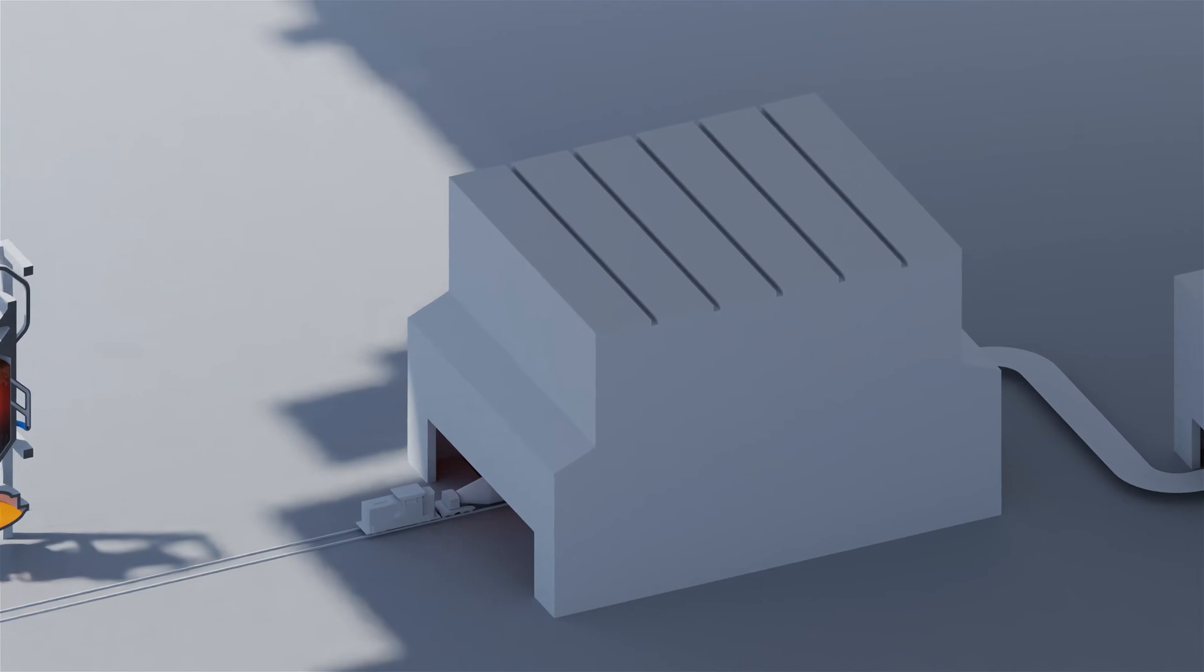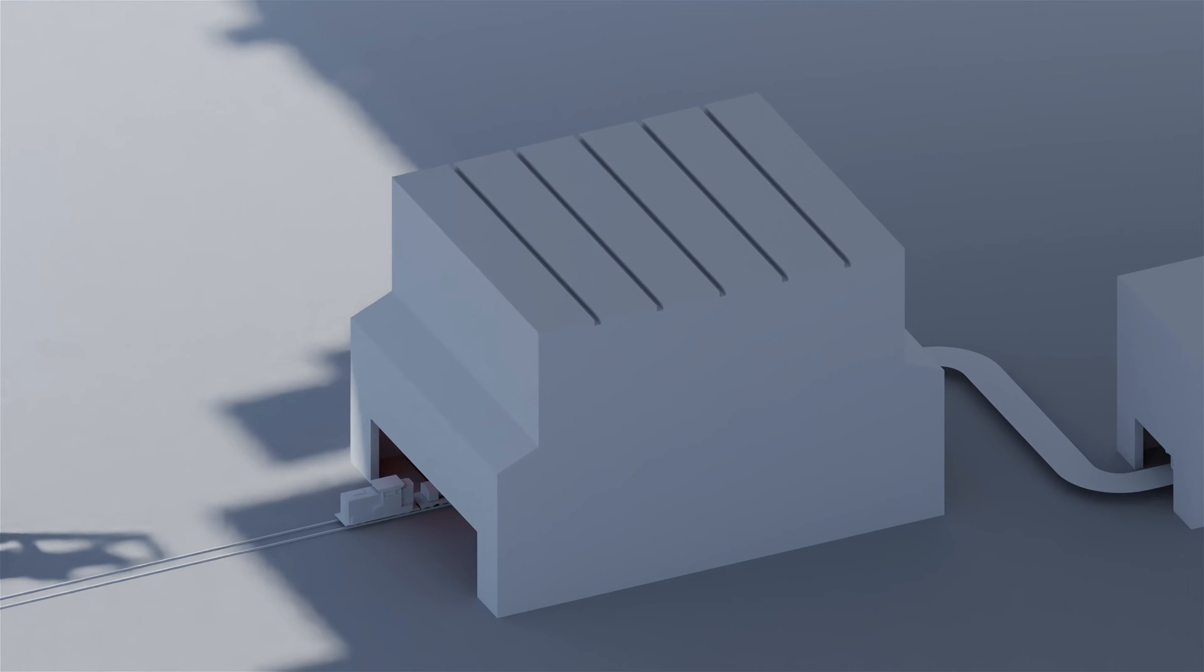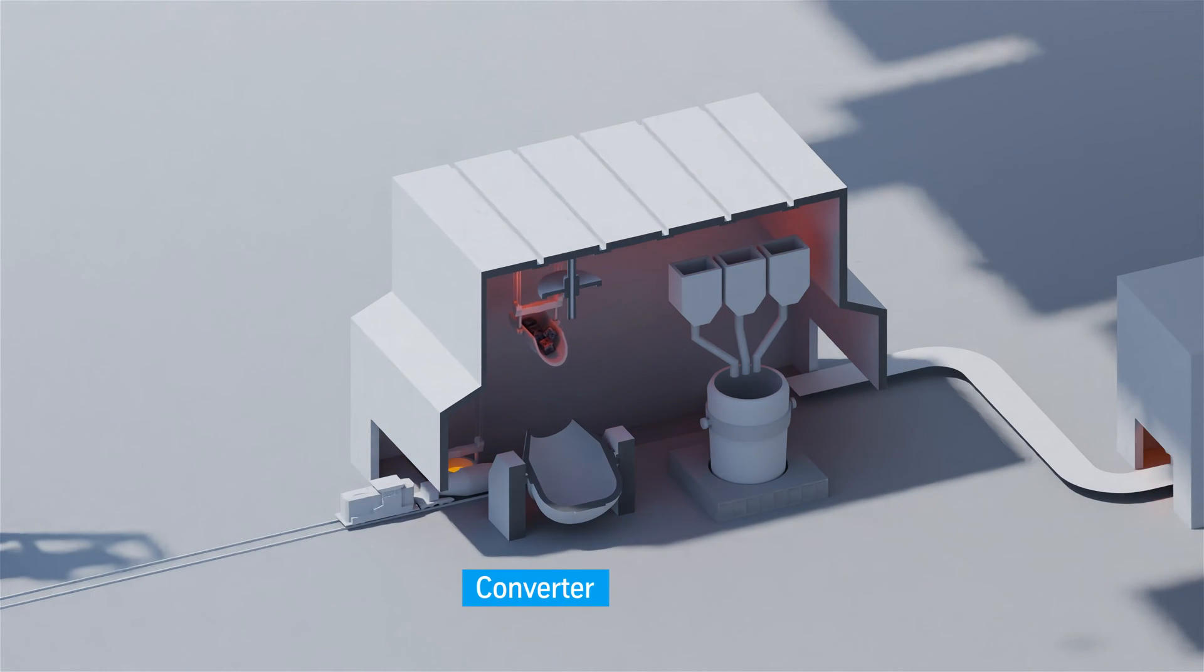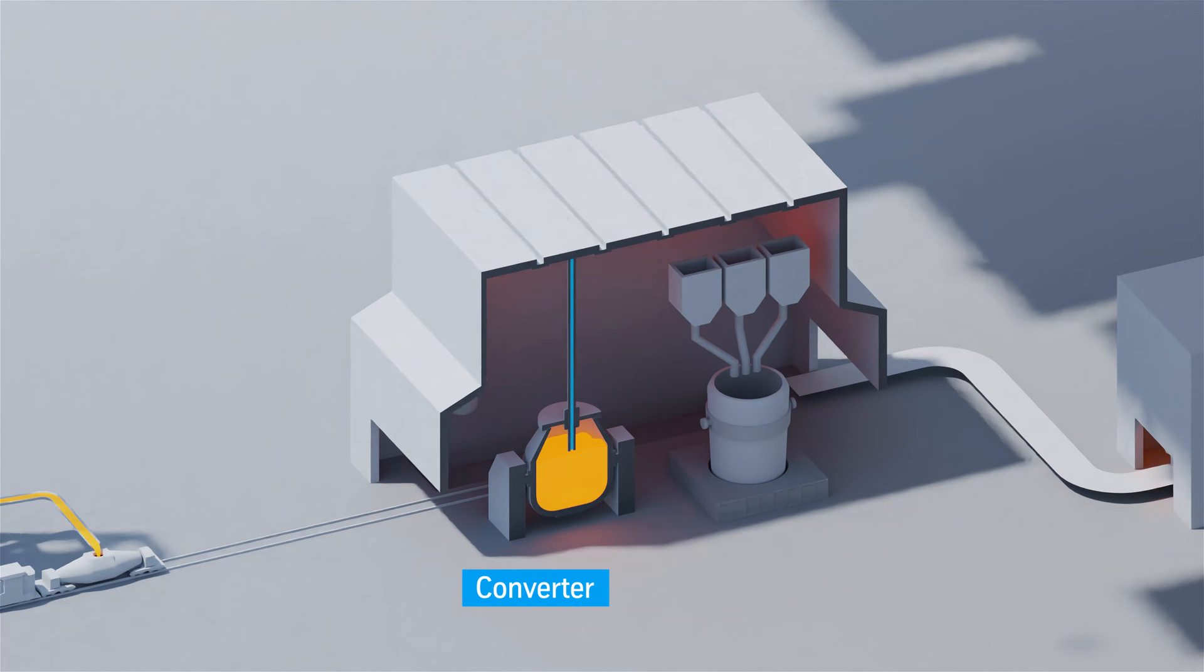It is only in the steel mill that the hot metal is turned into flexible and formable steel. In the converter, steel scrap is added to the hot metal. This benefits the environment and cools the steel. After that, oxygen is injected, which lowers the carbon content. The result is crude steel.